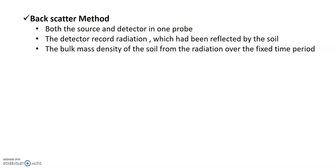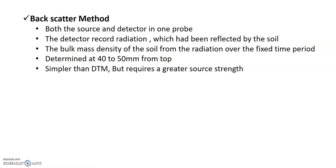In the backscatter method, the detector records radiation that has been reflected back by the soil. For loose soil, more radiation is reflected; for dense soil, more is absorbed. The backscatter method measures only 40–50 mm depth, while the direct transmission method measures 200–300 mm depth. The backscatter method is simpler than the direct transmission method but requires a stronger radioactive source. This completes the full determination of mass density using all 6 methods. Thank you, see you in the next video.